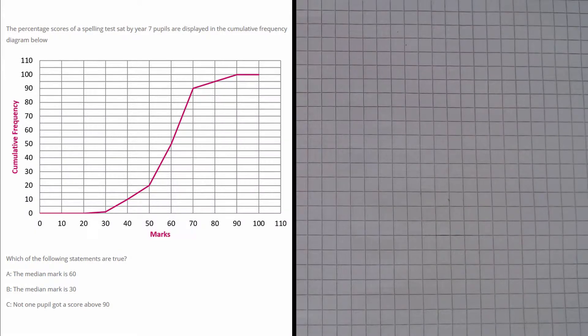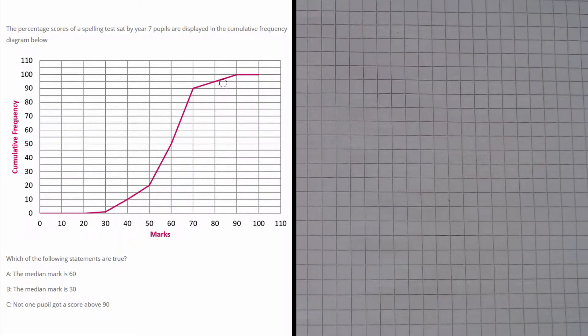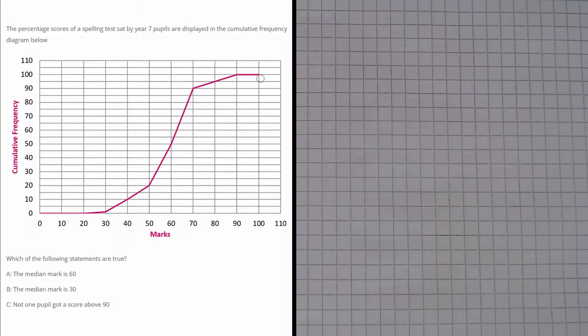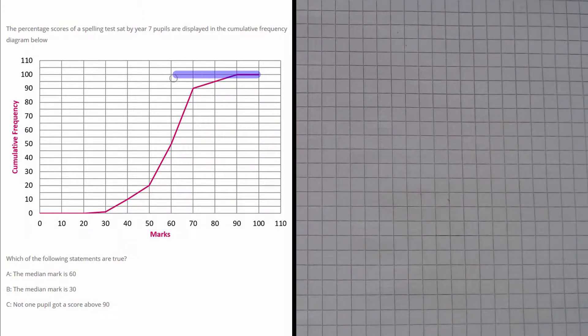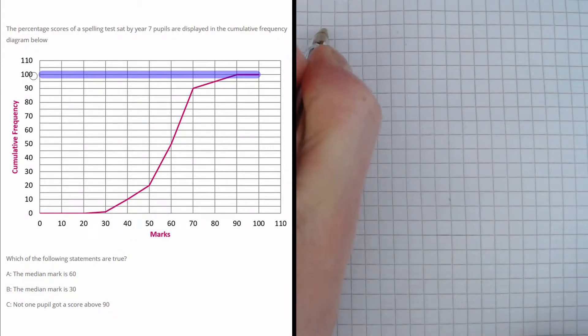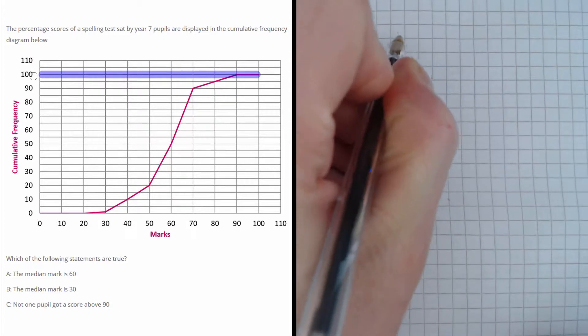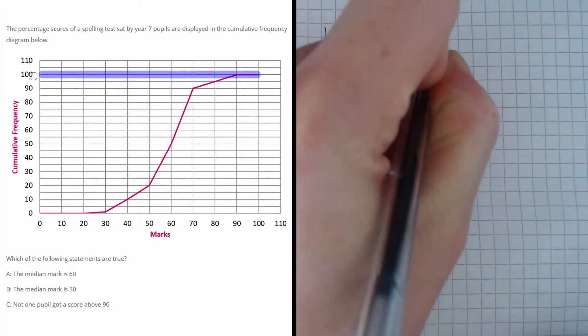And the way we do that is we look for the highest point on the graph and we can see that the graph is at its highest right here. And if we read off all the way to the left we can see that the cumulative frequency here is 100. So we know that there are 100 pupils in total.